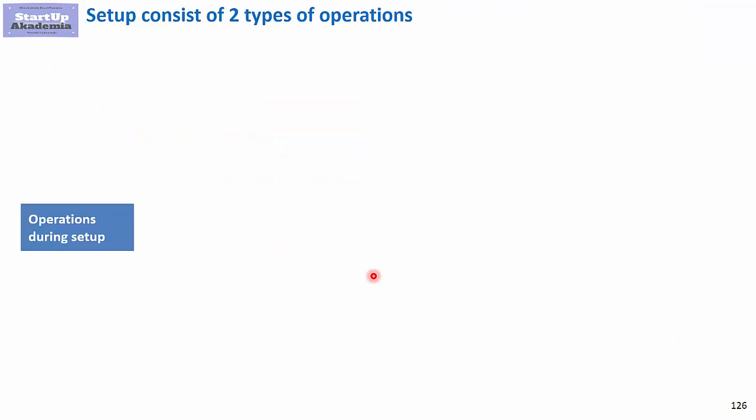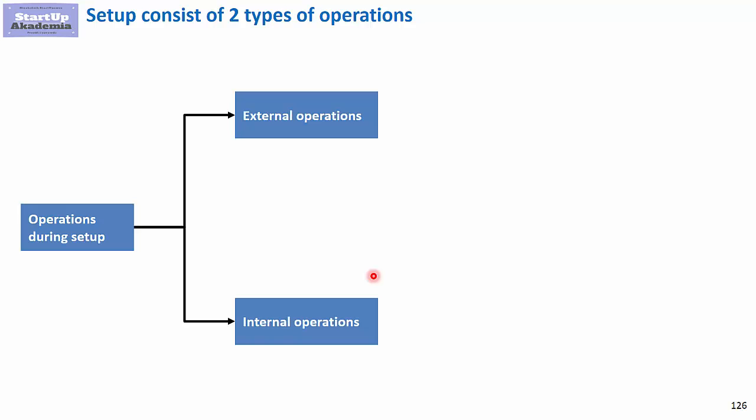When we are talking about setups, you will be talking about two types of operations: external ones and internal ones. External ones are those that can be done outside the machine and the machine can still be working. I don't have to stop it in order to do something. With internal operations, it's the other way around. You have to stop the machine in order to perform this operation.